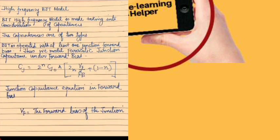The next topic is the high frequency model for the BJT. In the previous class we discussed the high frequency model of the MOSFET; here we are going to discuss the high frequency model of the BJT. Similar to the MOSFET, the BJT high frequency model is made taking into consideration the capacitances.